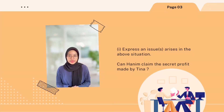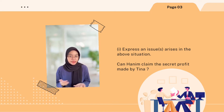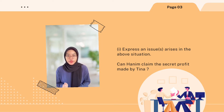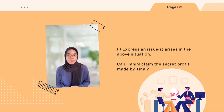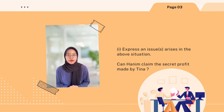The issue arising is: can Hanim claim the secret profit made by Tina? It is because Tina made a secret profit. Secret profit occurs when a principal asks the agent to sell property at a price, the agent sells at that price but tells the principal a lower price and keeps the balance. One action the principal can take is to recover the extra amount taken by the agent as secret profit.